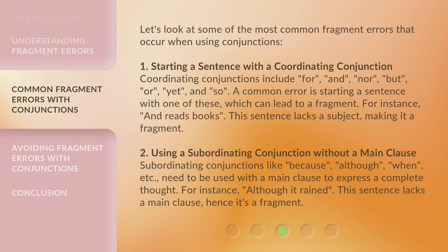2. Using a subordinating conjunction without a main clause. Subordinating conjunctions like 'because,' 'although,' 'when,' etc., need to be used with a main clause to express a complete thought. For instance, 'Although it rained.' This sentence lacks a main clause, hence it's a fragment.